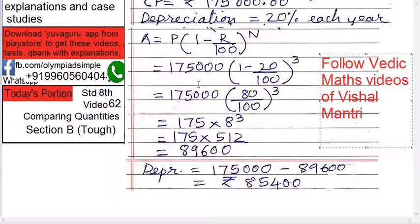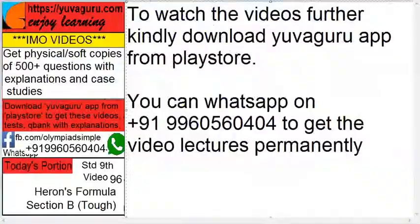So it becomes 175,000 minus 89,600 equals to 85,400. That is your answer.